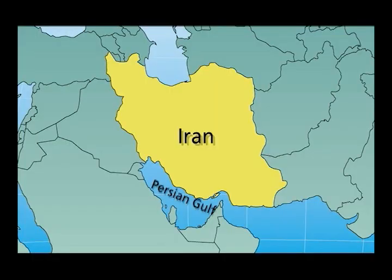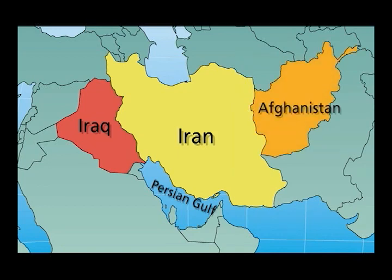Iran is on the Persian Gulf, so we get all this oil that's from the Gulf, and that matters for shipping and for lots of international commerce. It also borders Iraq, and we have the Iraq situation. It borders Afghanistan, and there's a continuing war in Afghanistan. So this actual location of Iran — the neighborhood it's in and the territory that it takes up — makes it crucial to study.